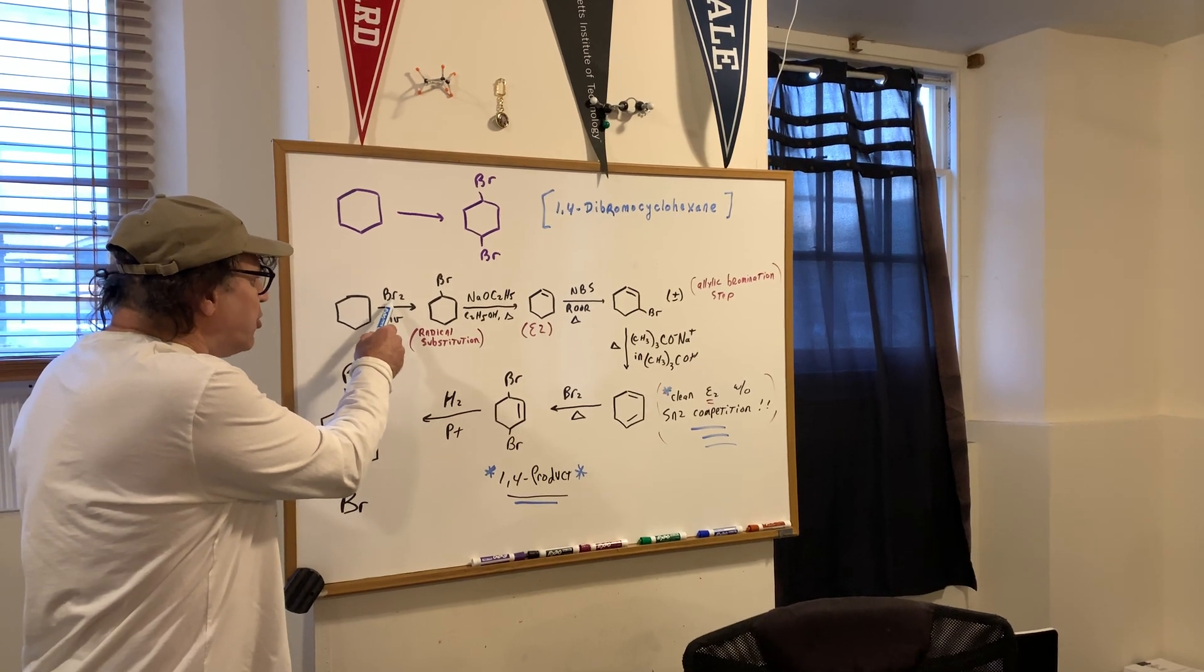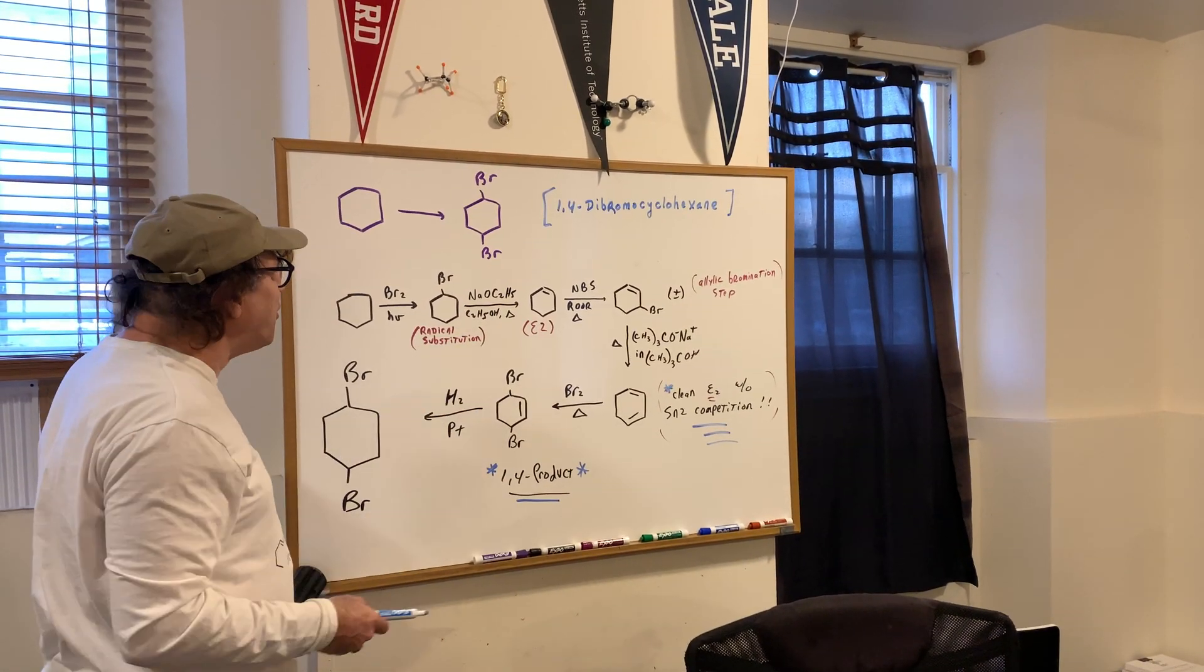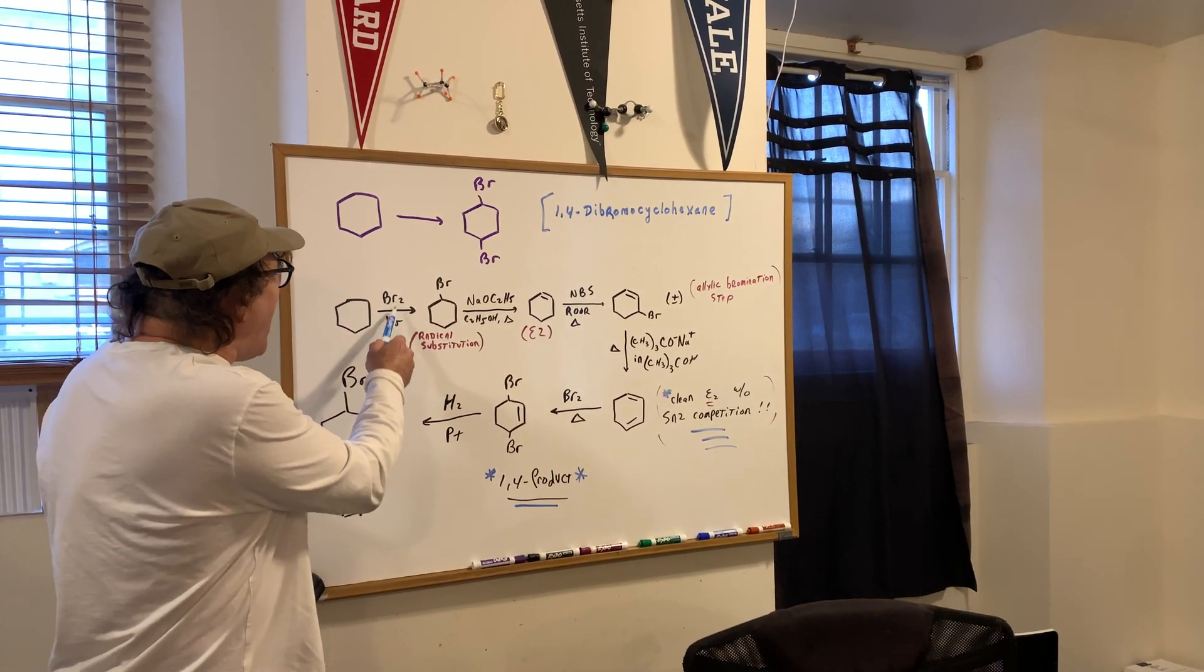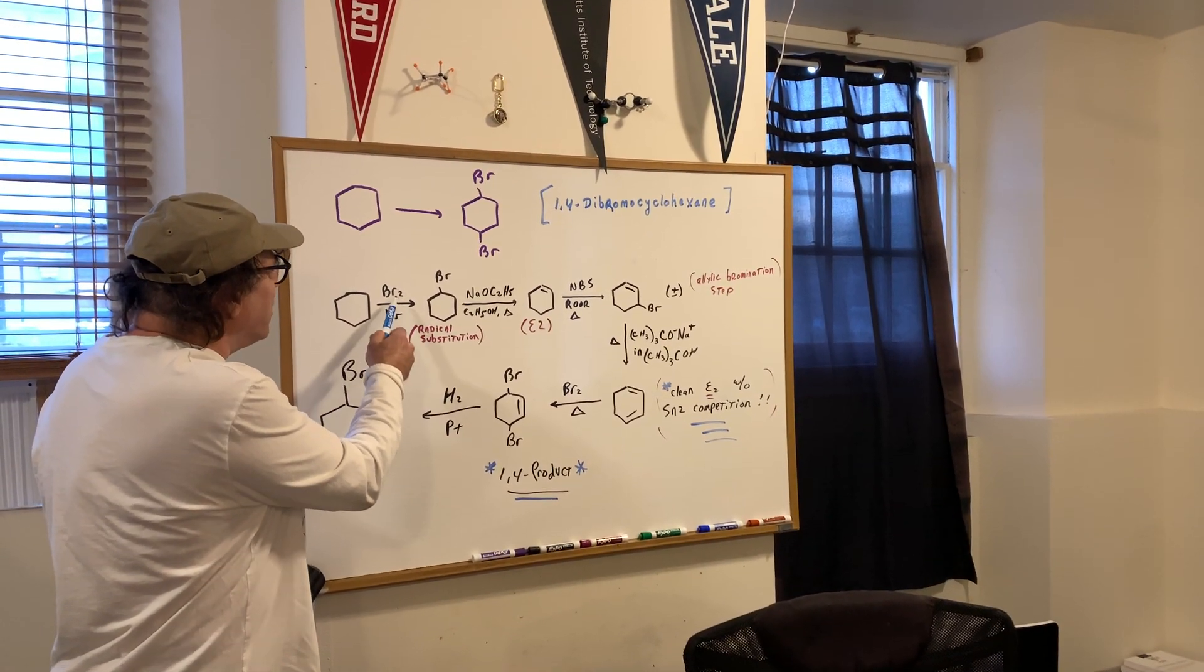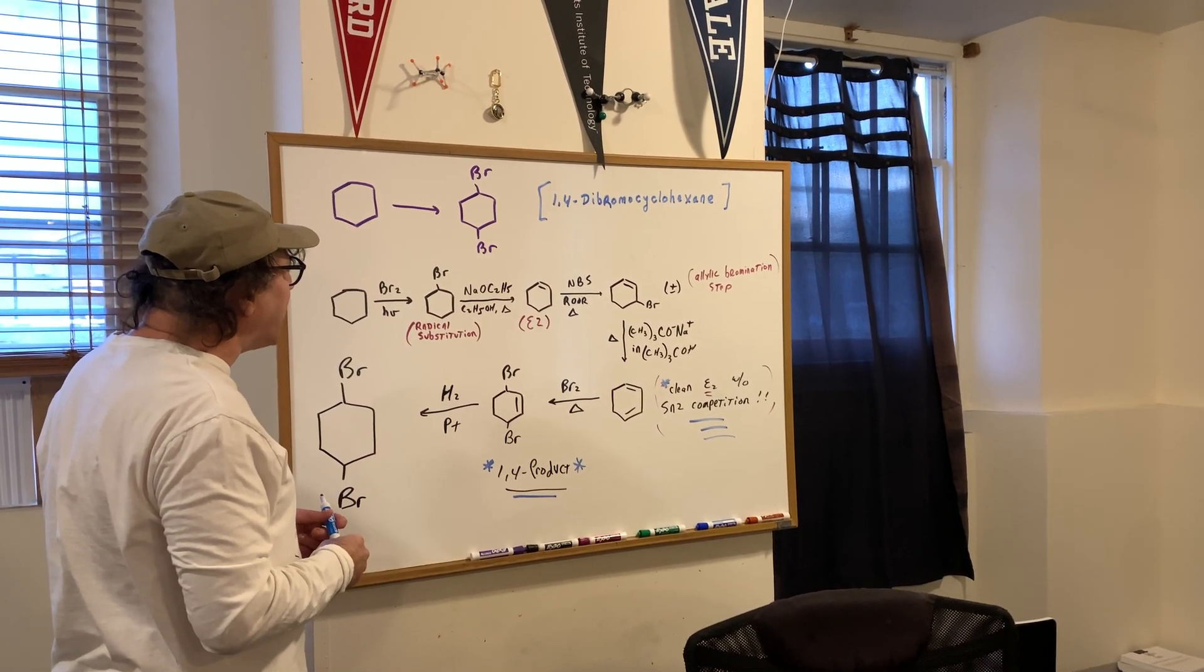The first thing I'm going to do, as you guys can see, the students in my group have it in front of you. I'm going to do a radical substitution. So I'm going to use bromine light, and that's going to brominate the cyclohexane ring.